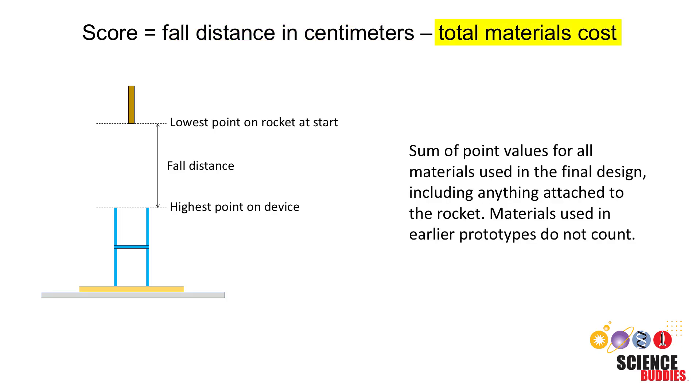The total materials cost is the sum of the point values of all materials used in your final design, including anything attached to the rocket. Materials used in earlier prototypes do not count.